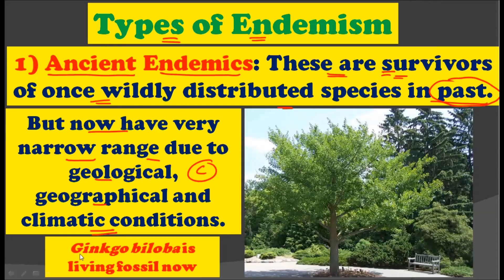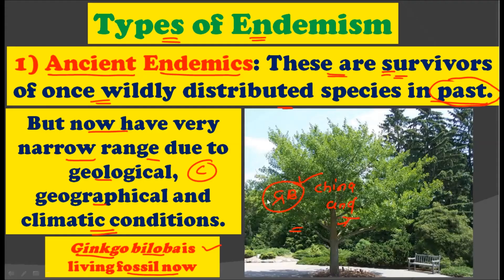An example of ancient endemics is Ginkgo biloba, which is a living fossil. This plant was spread throughout the world in the past, but due to certain geographical and climatic changes, in recent times it is only found in China and Japan. This is the first type of endemism — ancient endemism — in which a species was widely distributed in ancient times but has now become narrowly distributed and endemic.